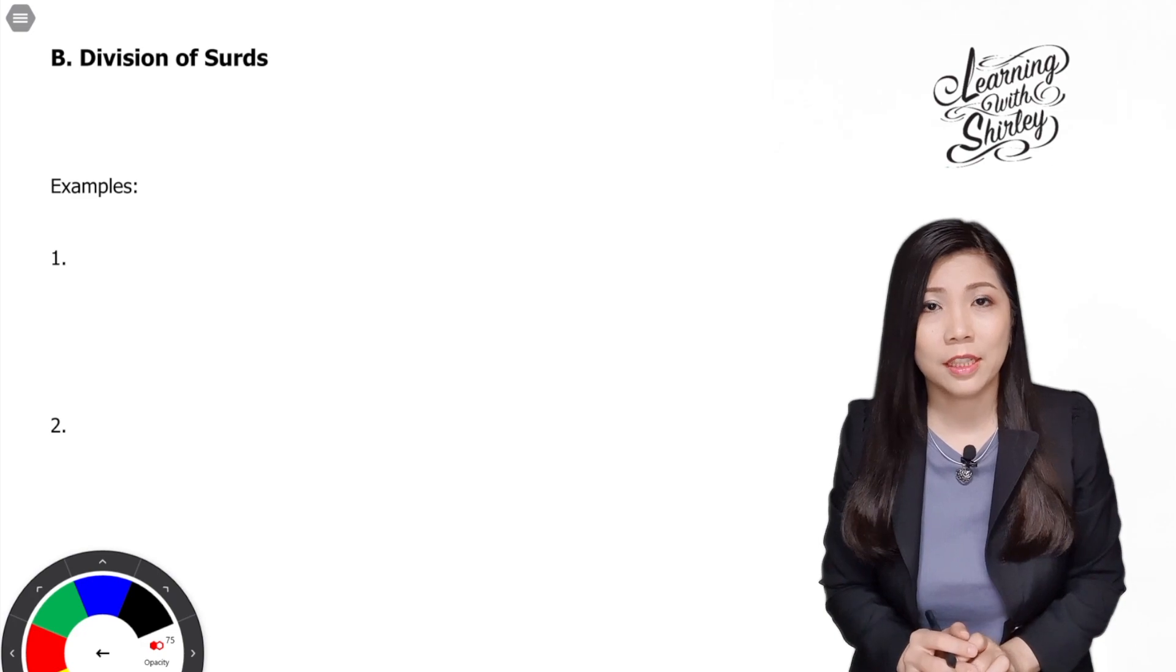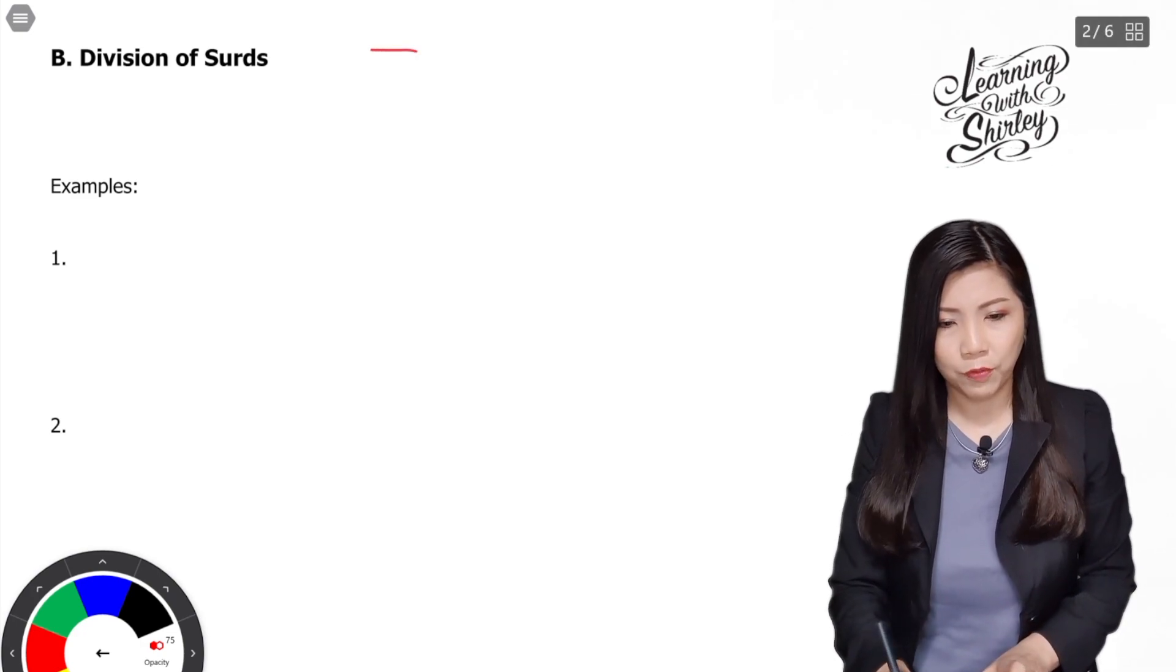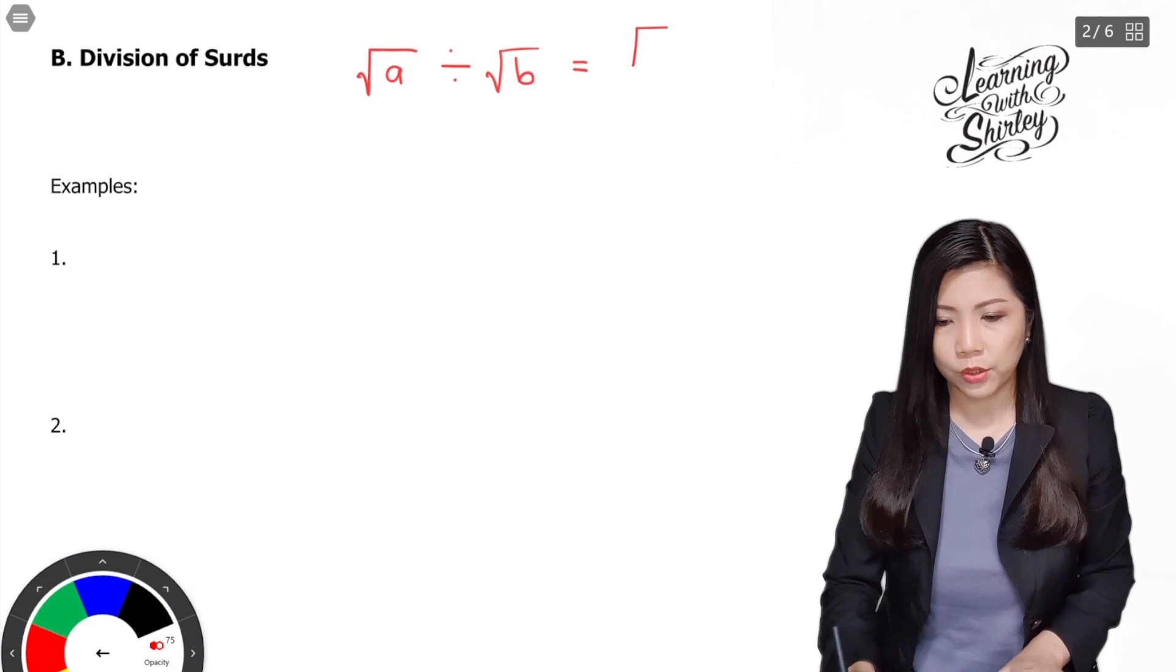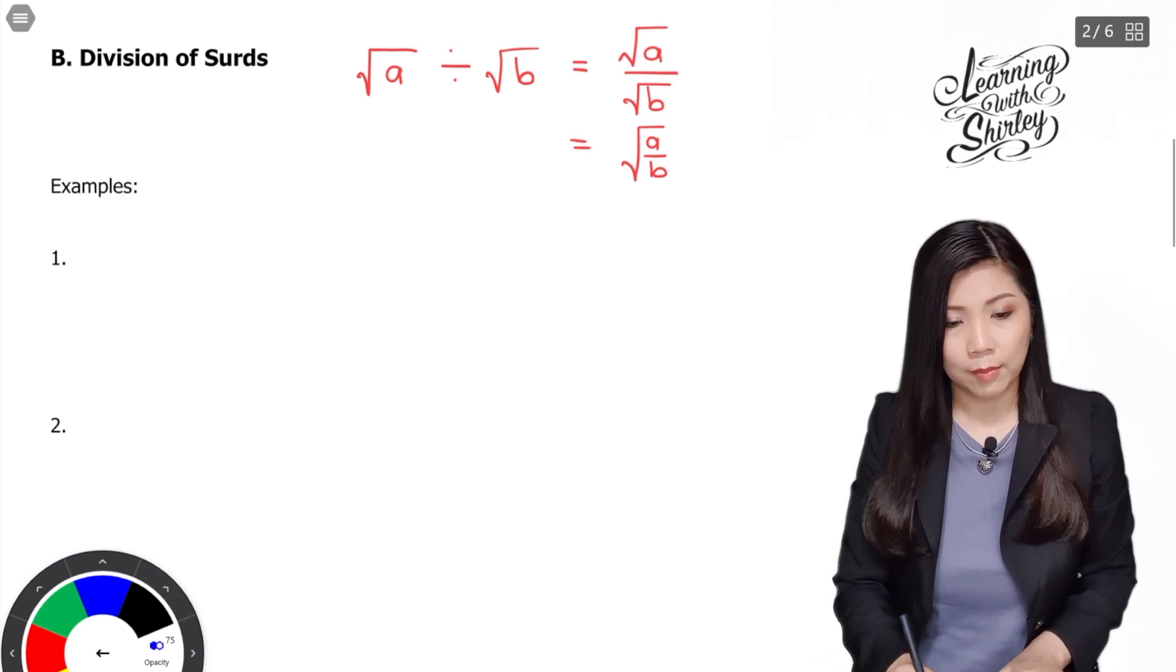The second part of the chapter is division of surds. So there's a formula for you to remember: surd A divided by surd B is equal to surd A over surd B, which is equal to surd A over B. Let's look at the examples.